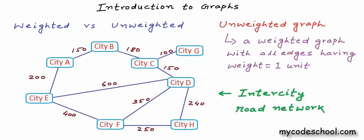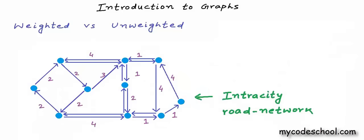So we have represented intercity road network as a weighted undirected graph. Social network was an unweighted undirected graph, World Wide Web was an unweighted directed graph, and this one is a weighted undirected graph. Intra-city road network — the road network within a city — can be modeled as a weighted directed graph because in a city there would be some one-ways. Intersections would be nodes and road segments would be edges. We can also draw an undirected graph as directed — for each undirected edge we'll have two directed edges. We may not be able to redraw a directed graph as undirected, but we can always redraw an undirected graph as directed.